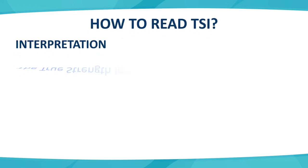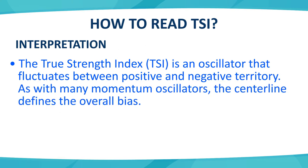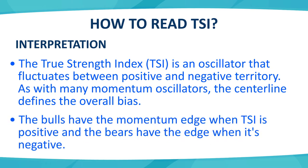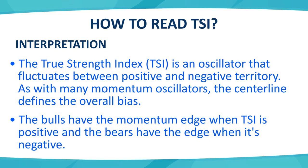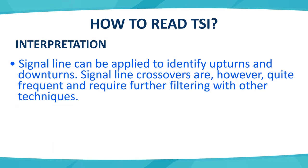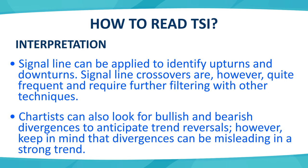Moving to interpretation now. TSI is an oscillator which fluctuates in positive or negative territory. The centerline divides both territories. When TSI is in positive territory, the trend is bullish. When TSI is in the negative zone, the trend is bearish. We can use the signal line to identify upturns and downturns. Moving to the chart, we can identify divergence — TSI peaks and troughs can move with price peaks and troughs.